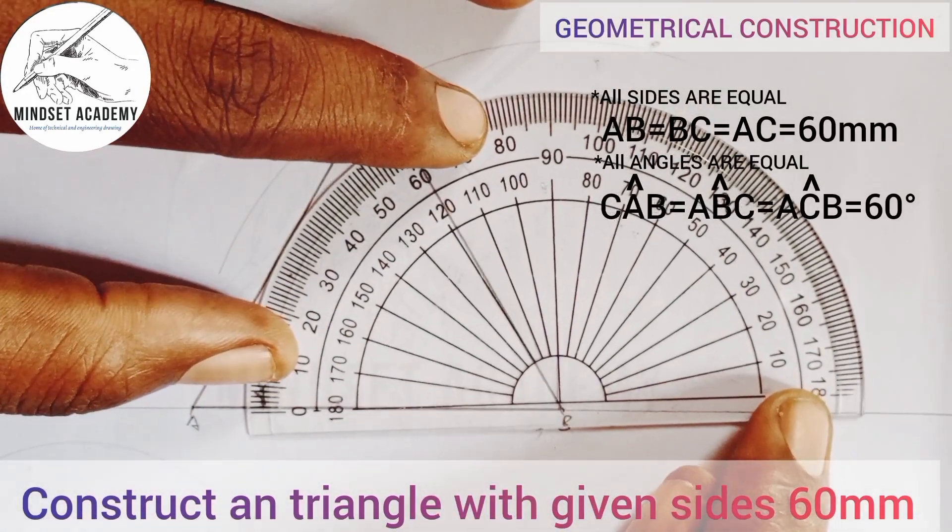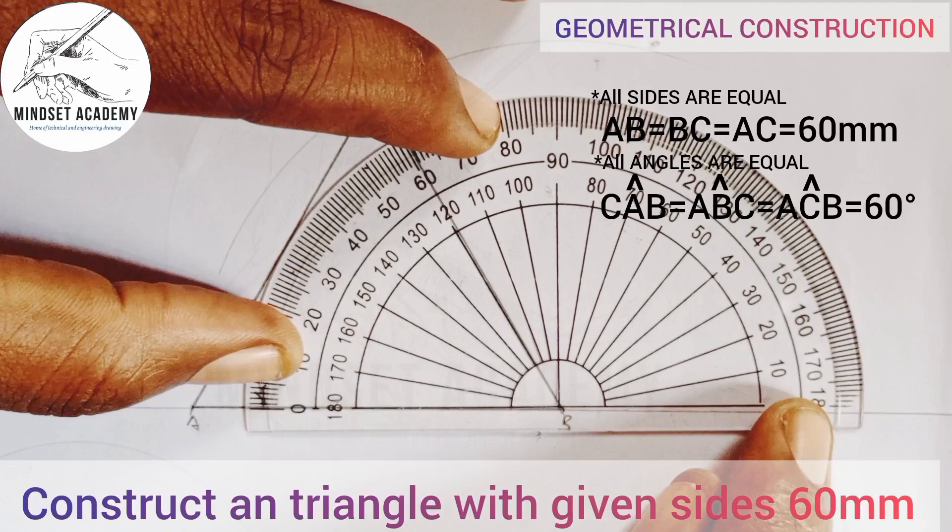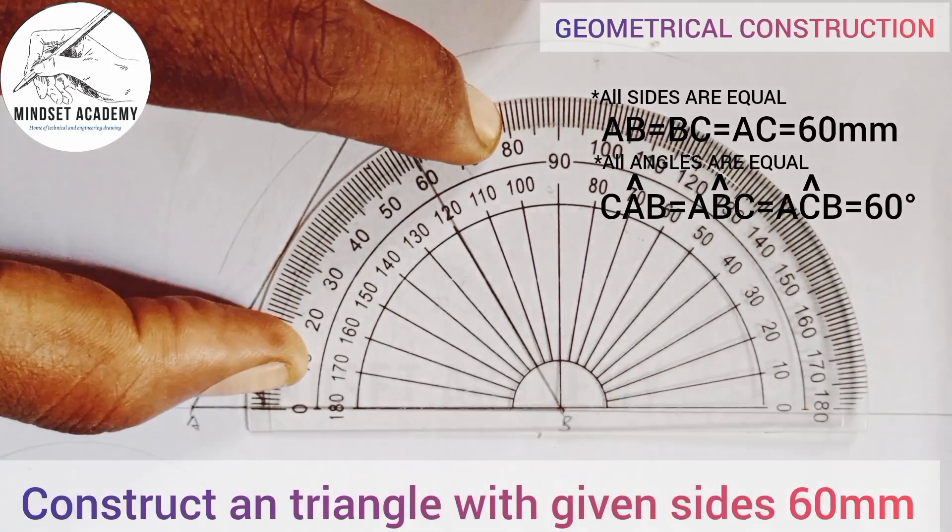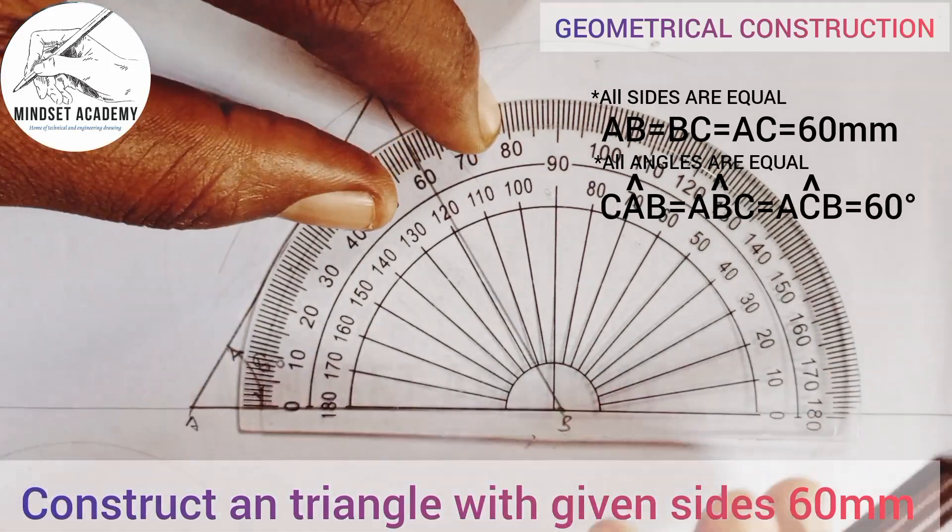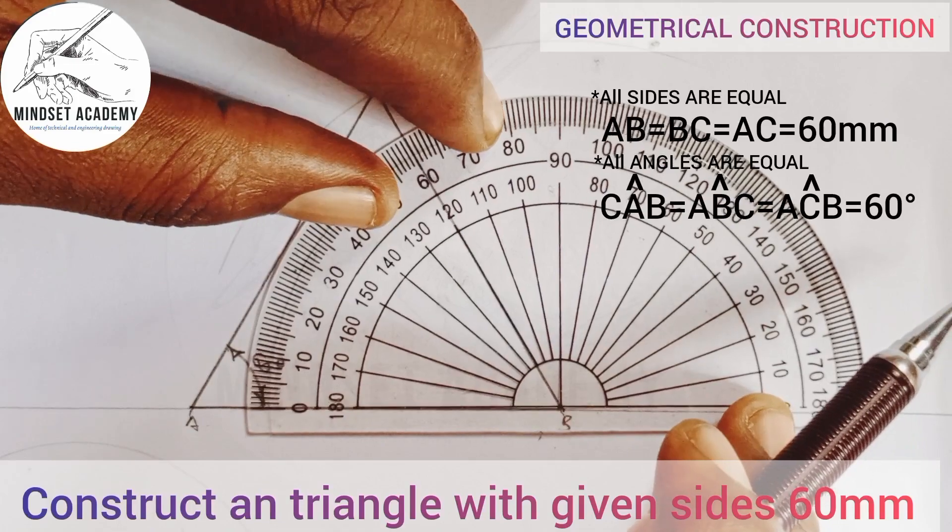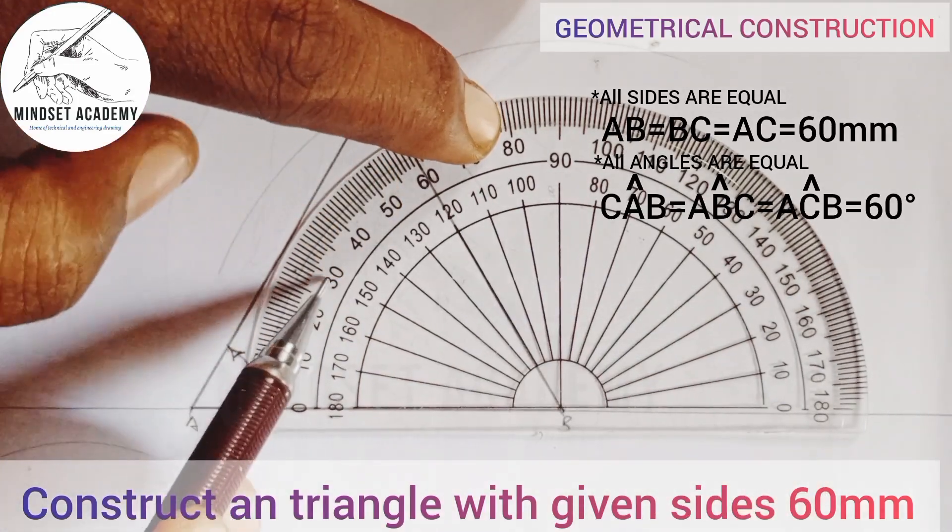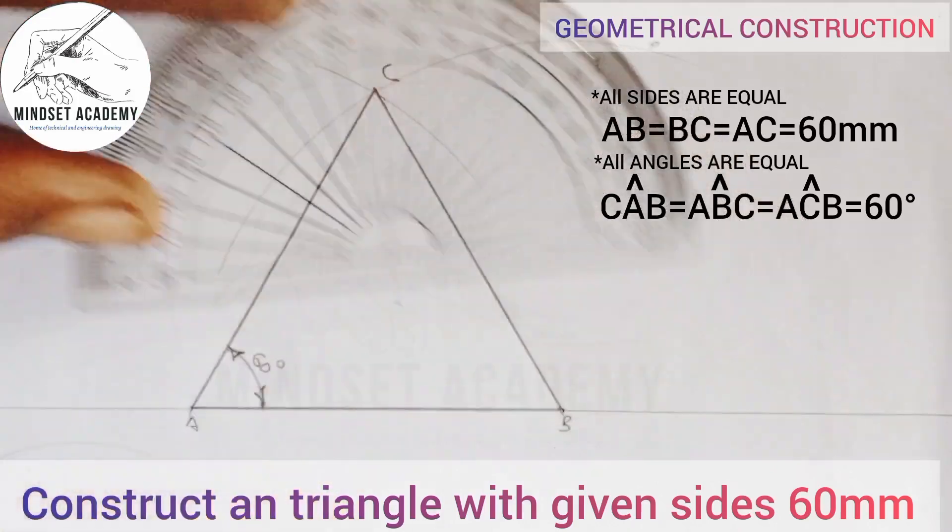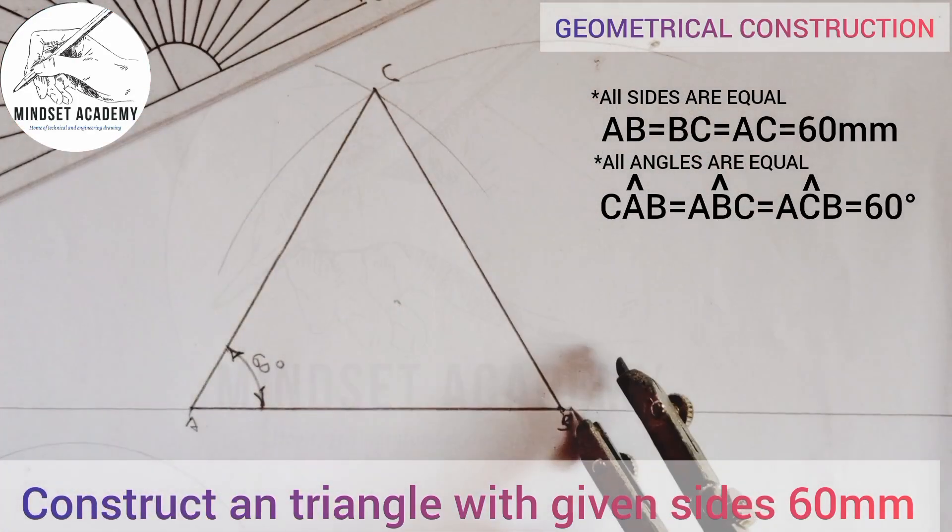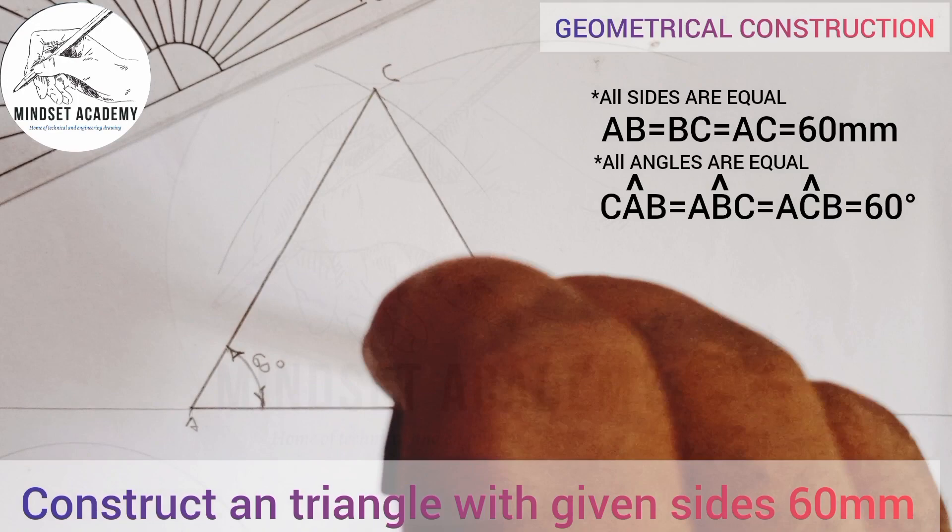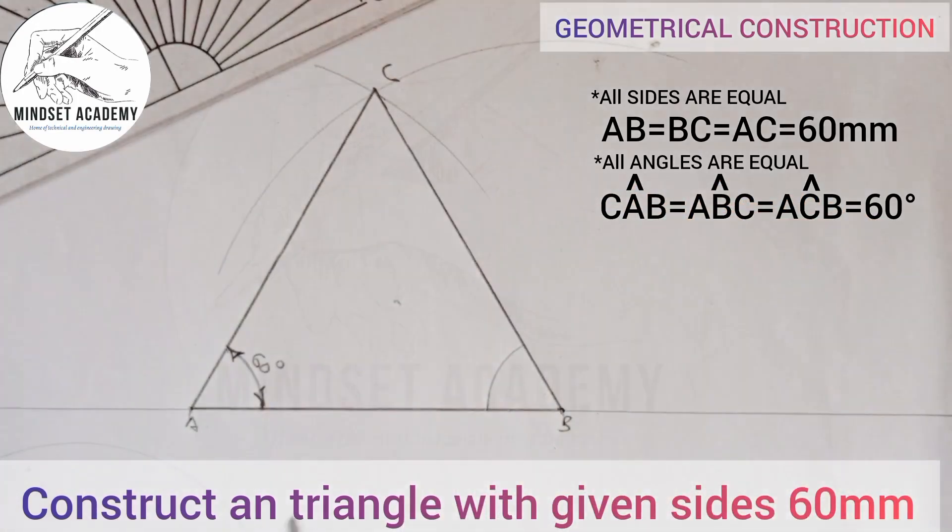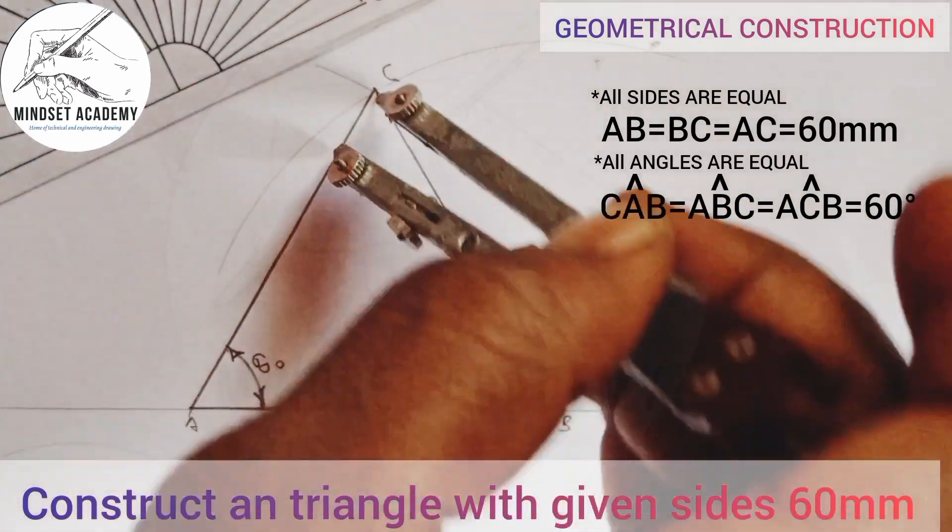You discover that the angle from here, this is zero, this is 10, 20, 30, 40, 50, 60. So the angle between here to here is also equal to 60. Similarly here also, 60.